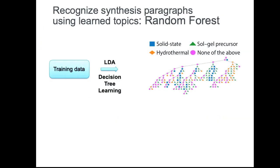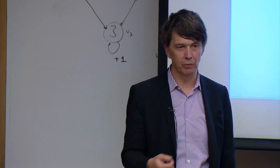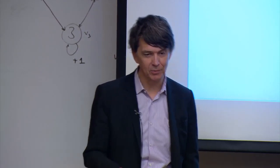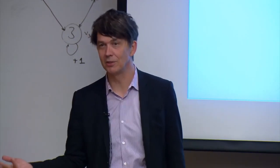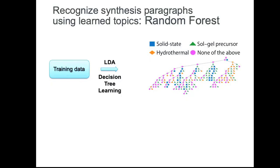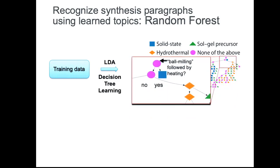Then we build decision trees — supervised in the sense that we have my group eat pizza and we've built what's called a mechanical Turk for annotating. They read a paragraph and answer: is this synthesis or not? For the smarter ones we ask: is this solid-state synthesis, or hydrothermal? We label a bunch of paragraphs for training data and build decision trees to classify paragraphs. For example, if you have 'ball milling followed by heating,' that's almost always solid-state synthesis. The computer kind of figures that out.